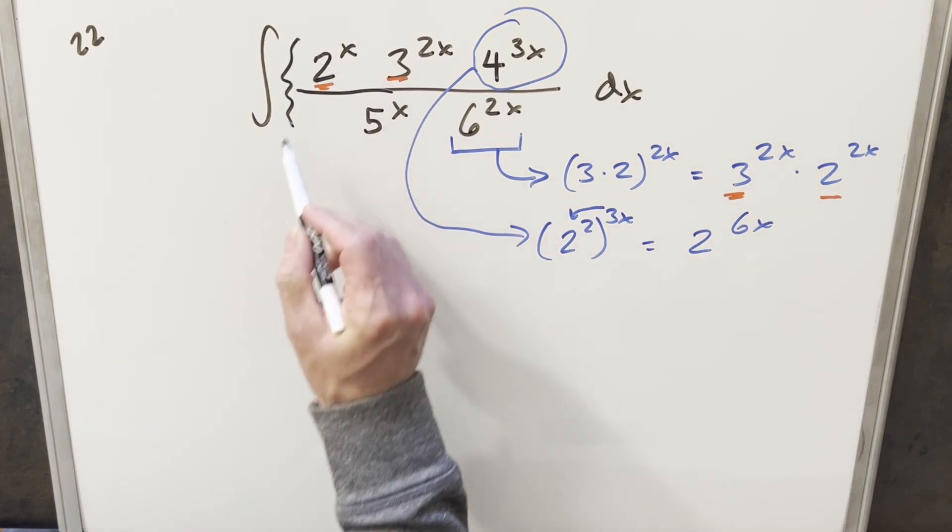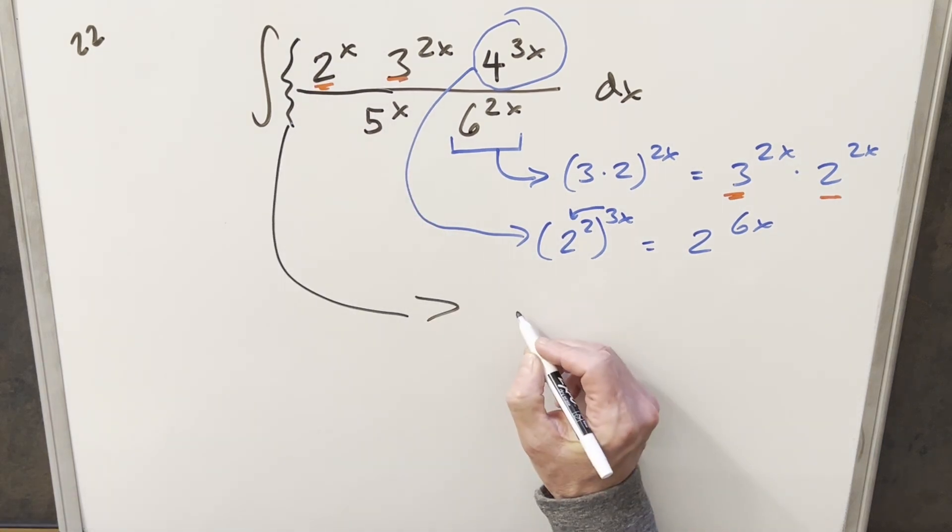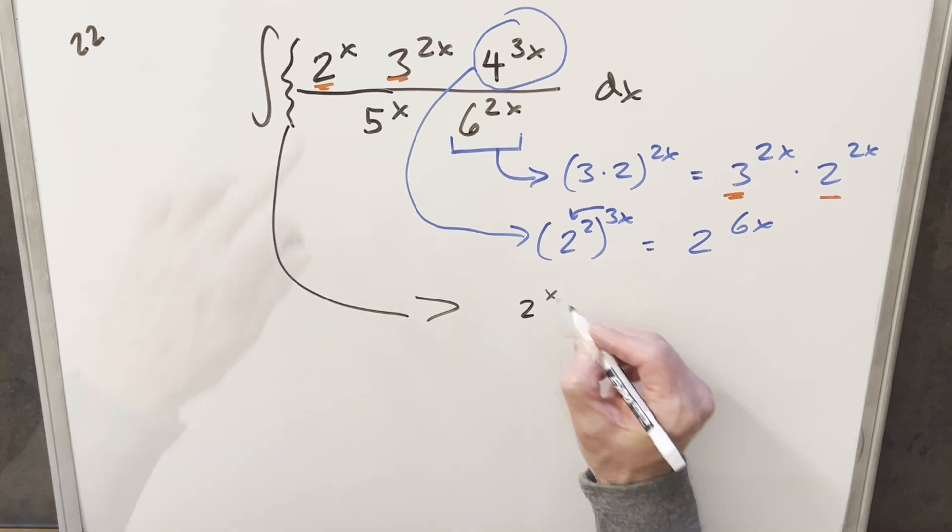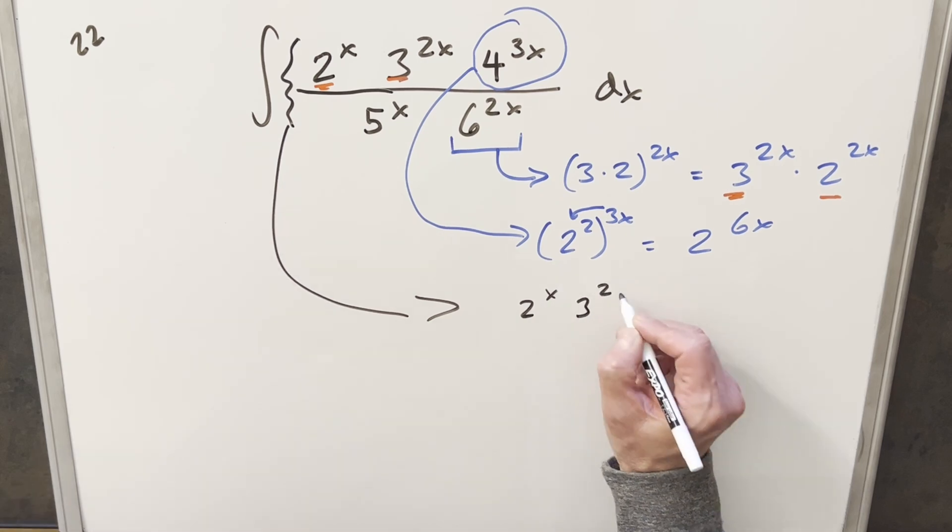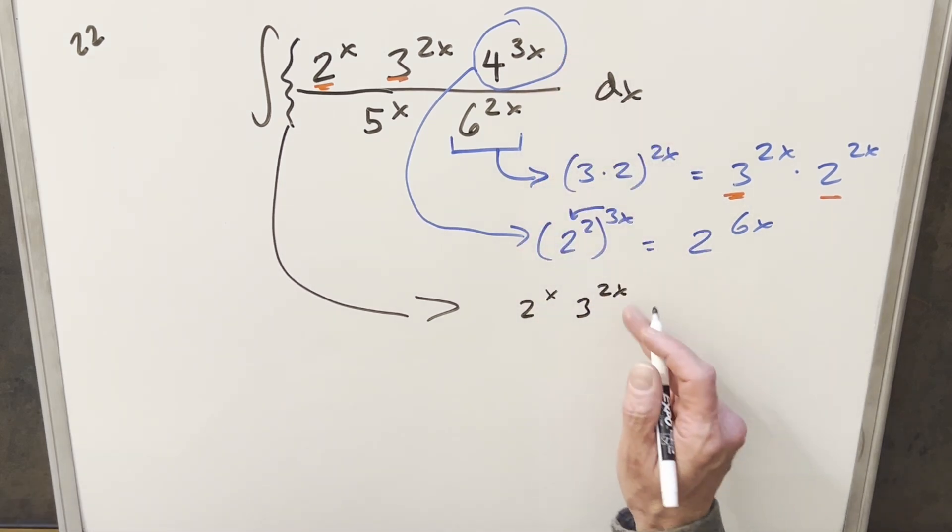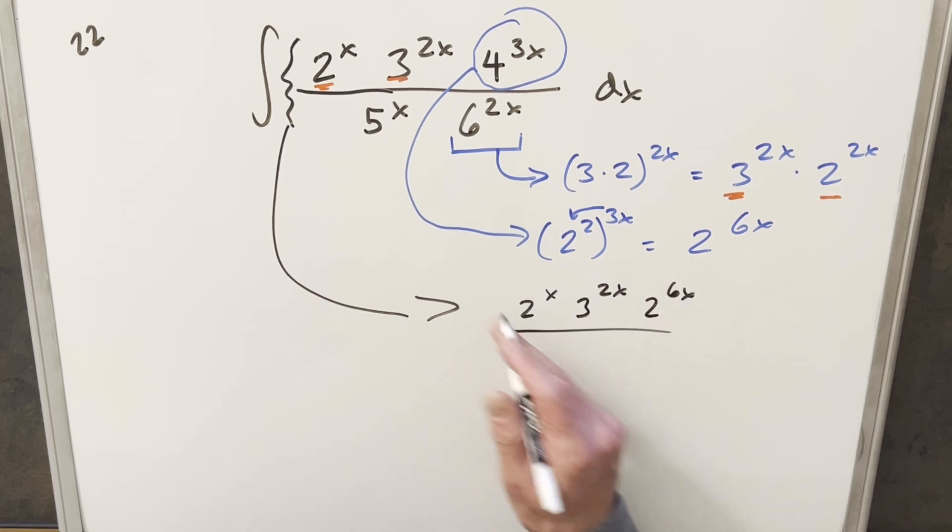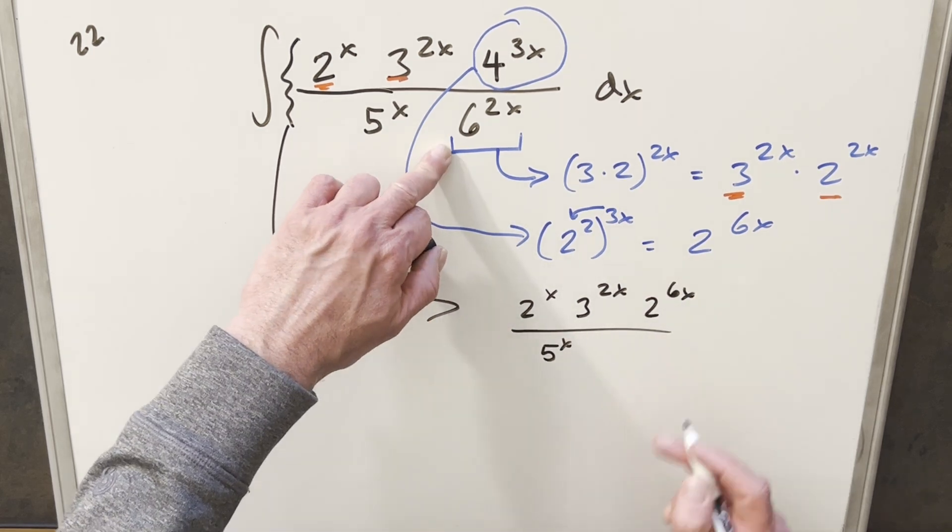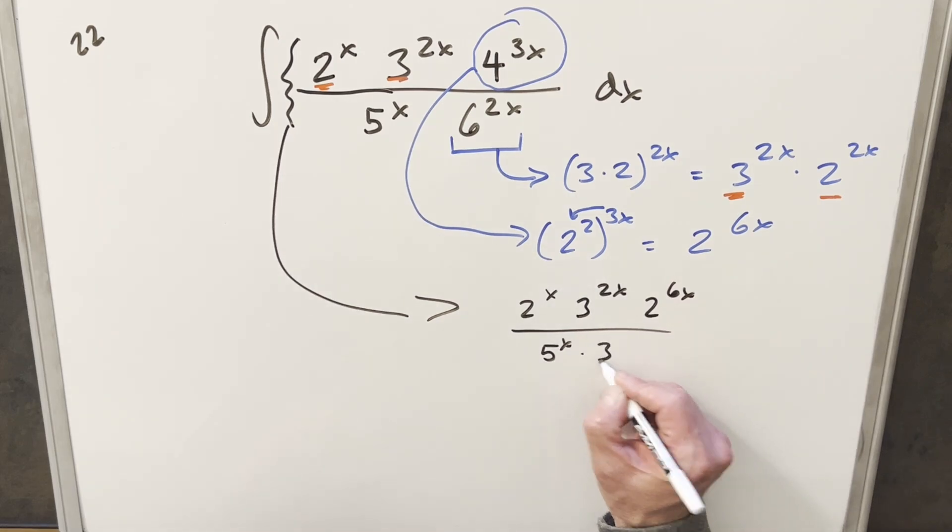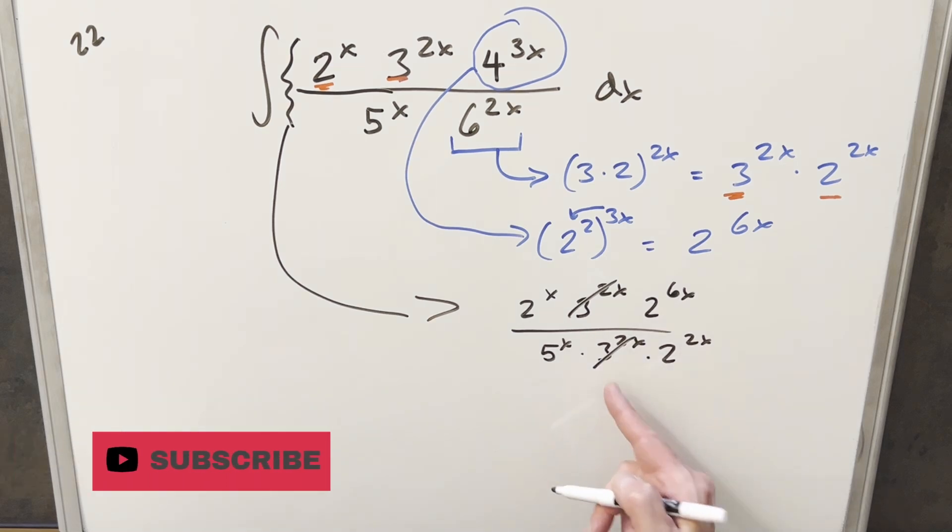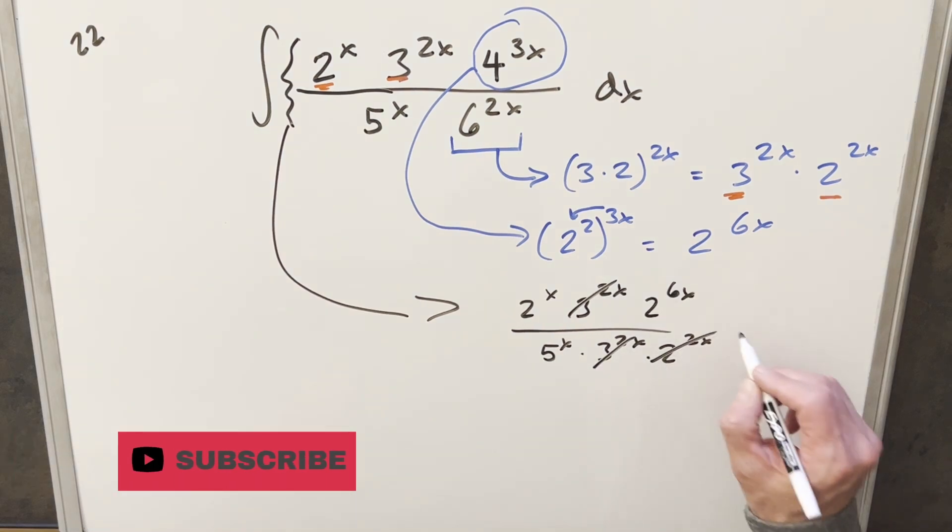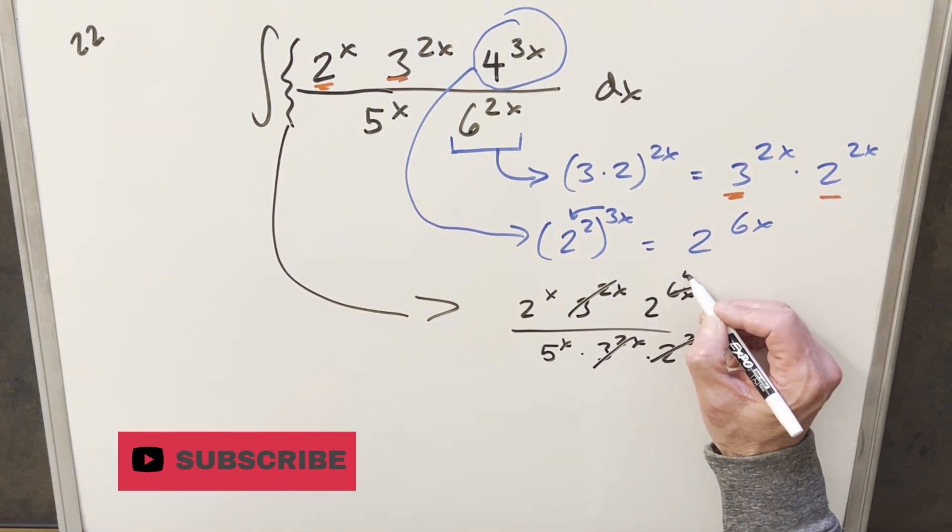So then from here, just taking this whole fraction and let's kind of manipulate it down here. We're going to have this going to become 2 to the x times 3 to the 2x. Then here for this 4 to the 3x, I'll write it like this: 2 to the 6x. And then here we're going to have 5 to the x. And then for 6 to the 2x, we'll use this over here, which is 3 to the 2x times 2 to the 2x. But then 3 to the 2x and 3 to the 2x can cancel right here. I can cancel 2 to the 2x with 2 of these here, and we have 2 to the 4x.